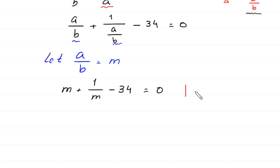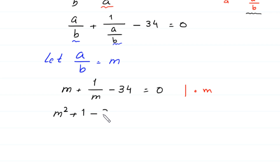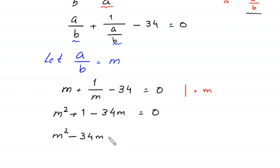We multiply both sides of this equation by M. The equation becomes M squared plus 1 minus 34M equals 0. Rearranging, we get M squared minus 34M plus 1 equals 0.